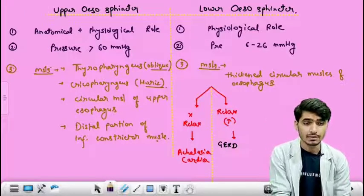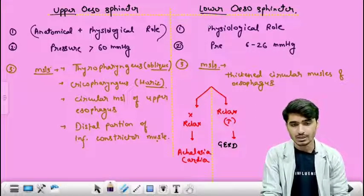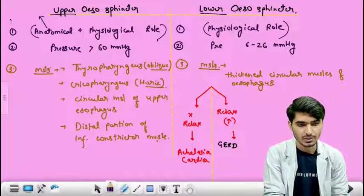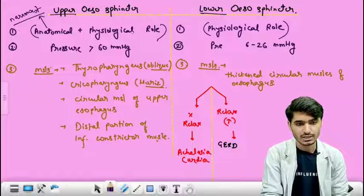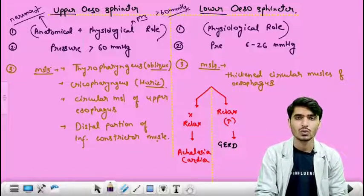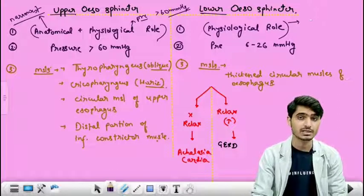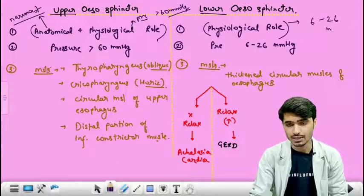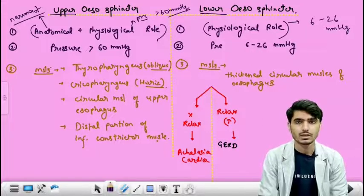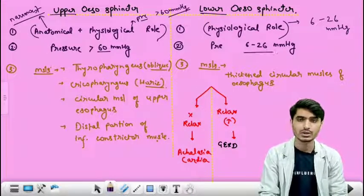The upper esophageal sphincter plays both an anatomical and physiological role, while the lower esophageal sphincter plays only a physiological role. The upper esophageal sphincter is the narrowest site of the GIT and has a pressure greater than 60 mmHg. The lower esophageal sphincter has a pressure of 6 to 26 mmHg and opens only when a bolus is being transferred through it.